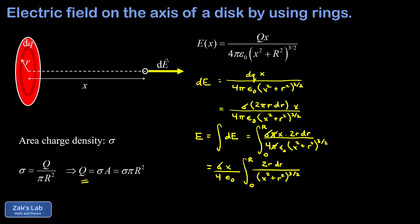The reason we kept the factor of 2 in the numerator is to recognize the derivative of the interior function — we need to use the chain rule backwards. When we find the antiderivative, we apply the power rule to (x² + r²)^(−3/2). Adding one to the exponent gives −1/2, and dividing by that exponent is the same as multiplying by −2. We evaluate the whole expression from zero to R.